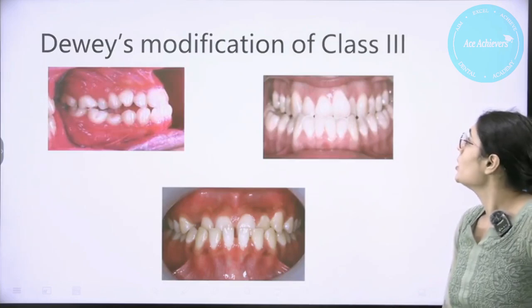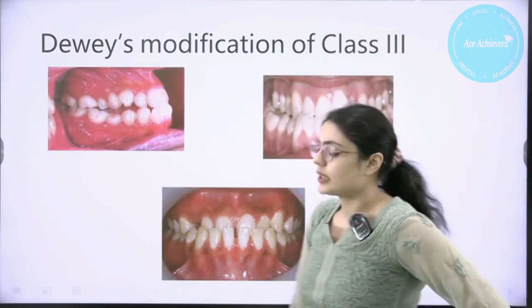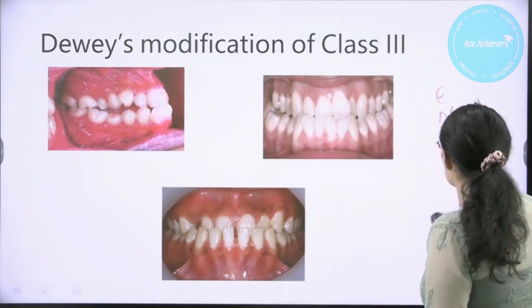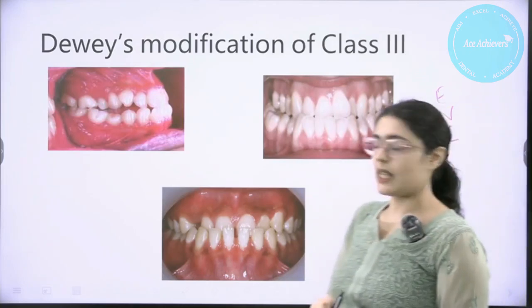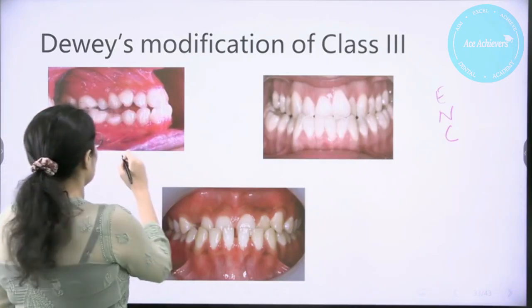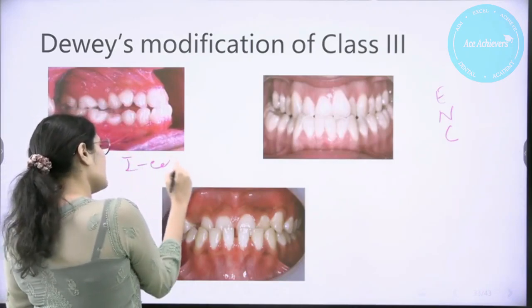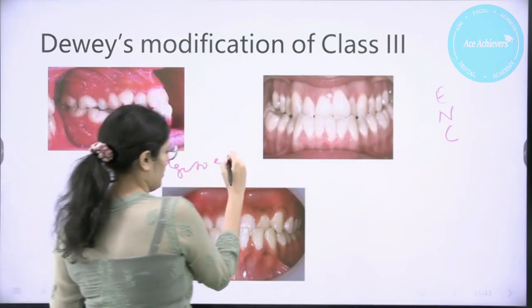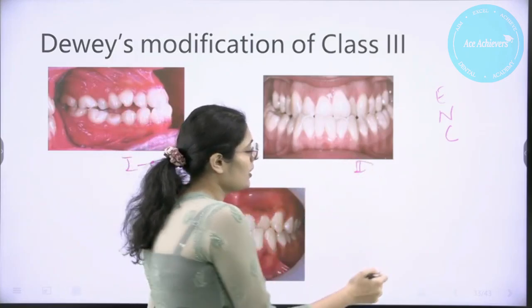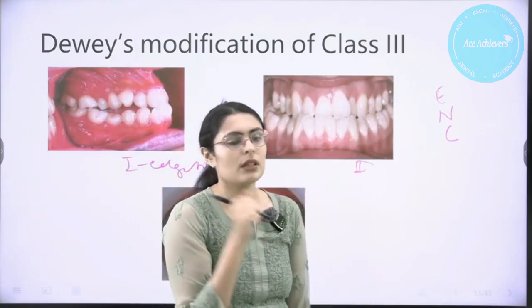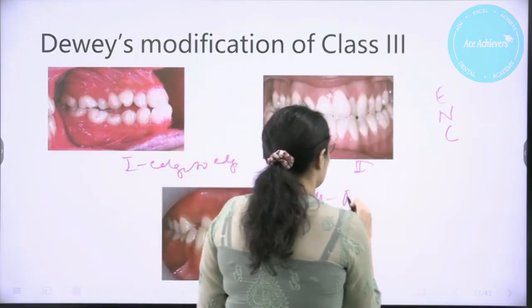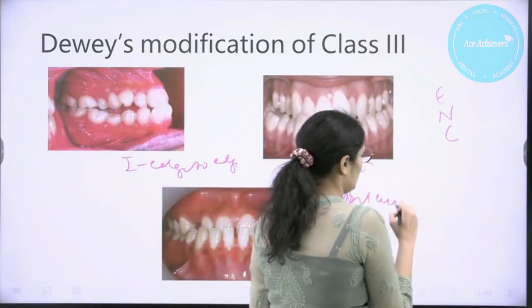For the modification of Class 3, the mnemonic is E-N-C. Type 1 is an edge-to-edge bite. Type 2 is when the bite is normal but the incisors are crowded. And Type 3 is a complete anterior crossbite.